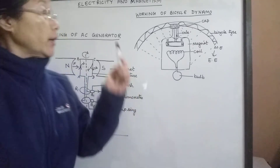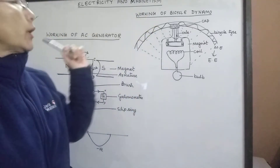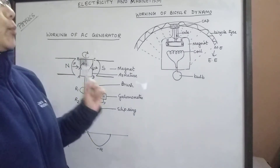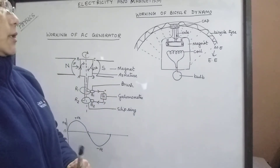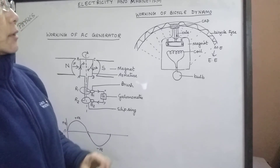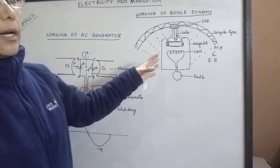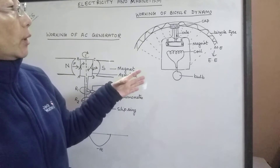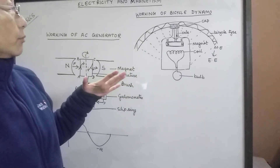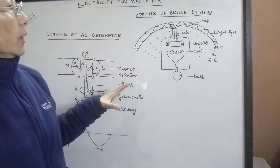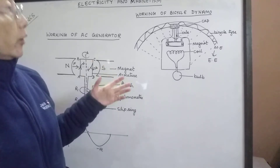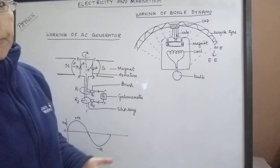Now we are going to study the working of a bicycle dynamo and the working of an AC generator. These are group D questions. In these questions you are sometimes asked to label the parts in a given diagram, or you may have to draw the diagram yourself. You need to know both the drawing of the diagram as well as the explanation.